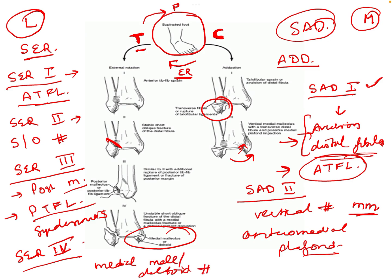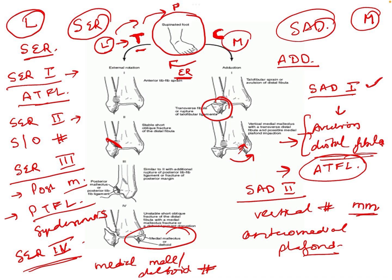These are the four types of injury in supination-external rotation. The key point is that the force originates from the lateral side because the lateral structures are in tension, so the lateral structures are injured first, then the posterior structures, and finally the force reaches the medial side.